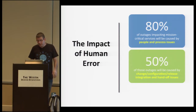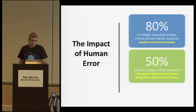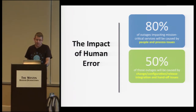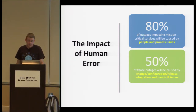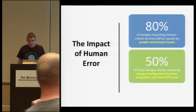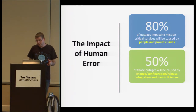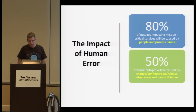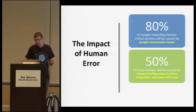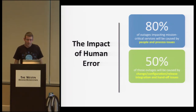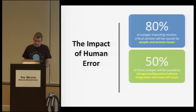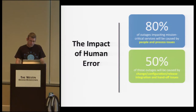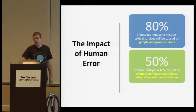80% of mission critical outages are, maybe not surprisingly, created by people and process faults. And out of these, 50% happen due to changes — changes to configurations, new releases, integrations, and handoffs between development and operations. This is not the best situation, to say the least, and we need to find a way to fix that.